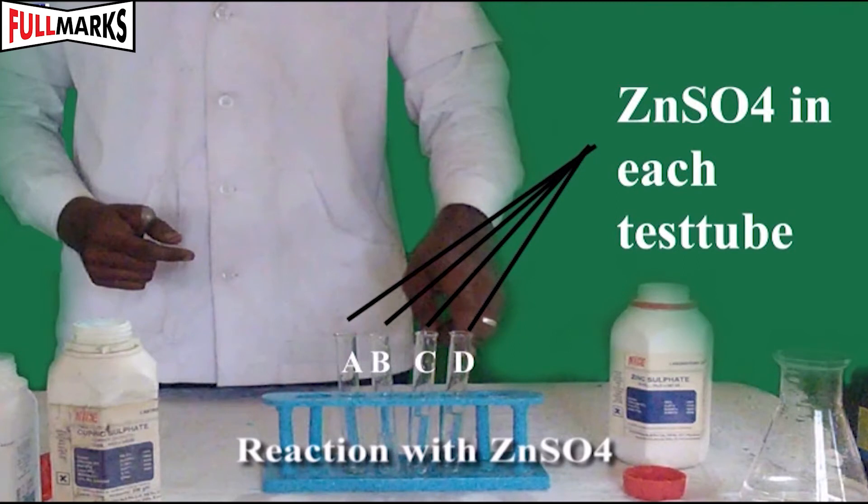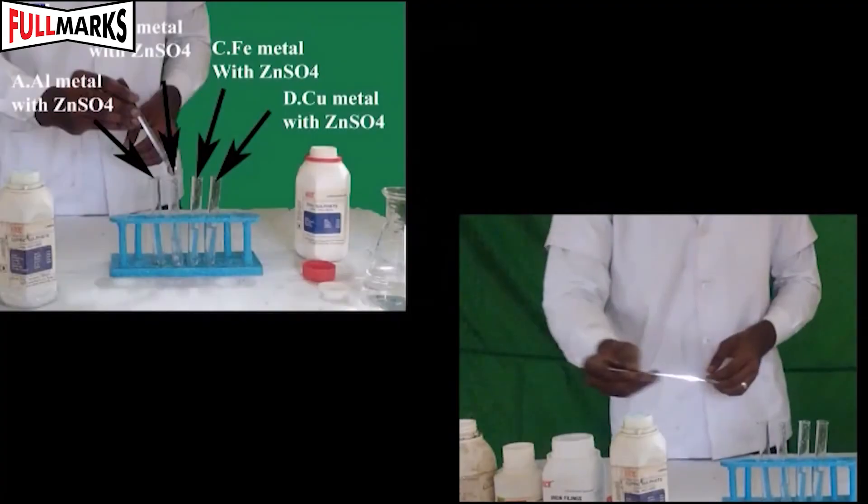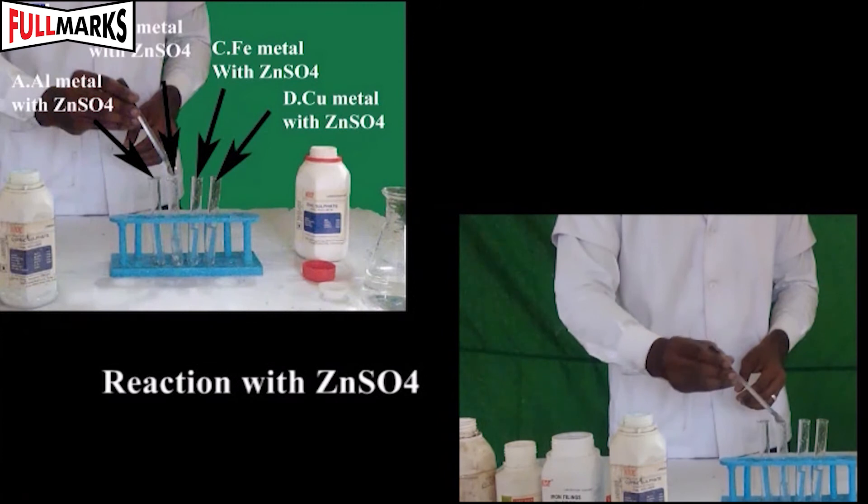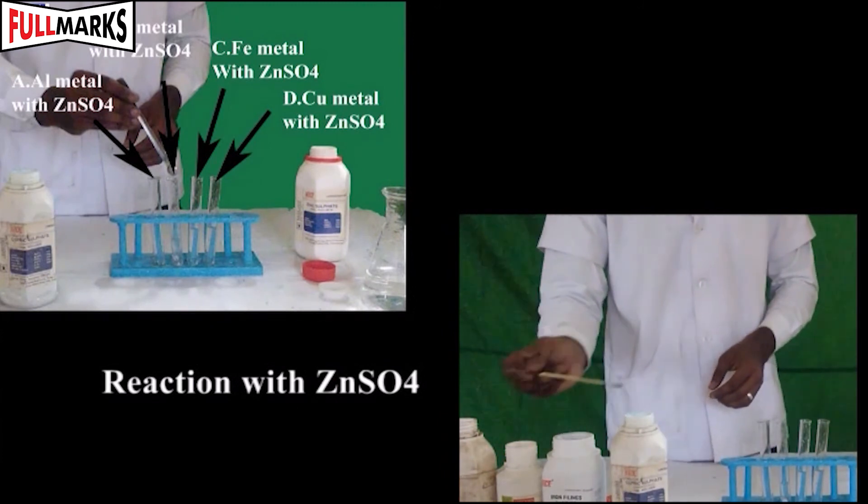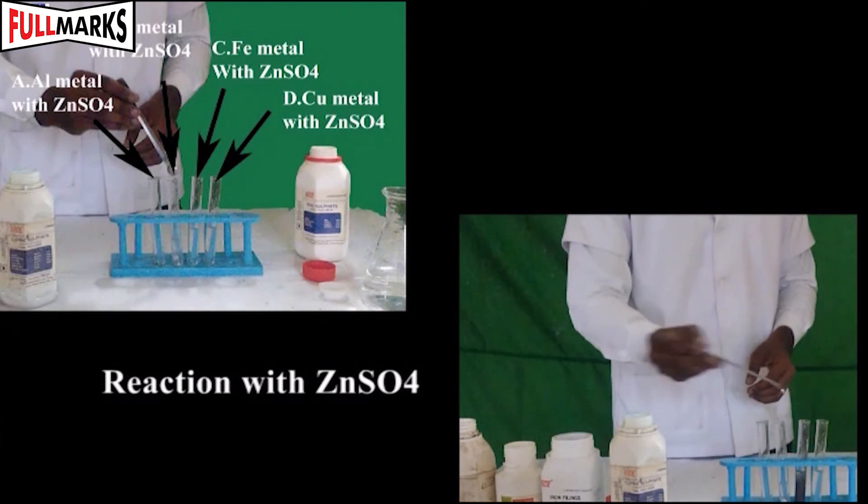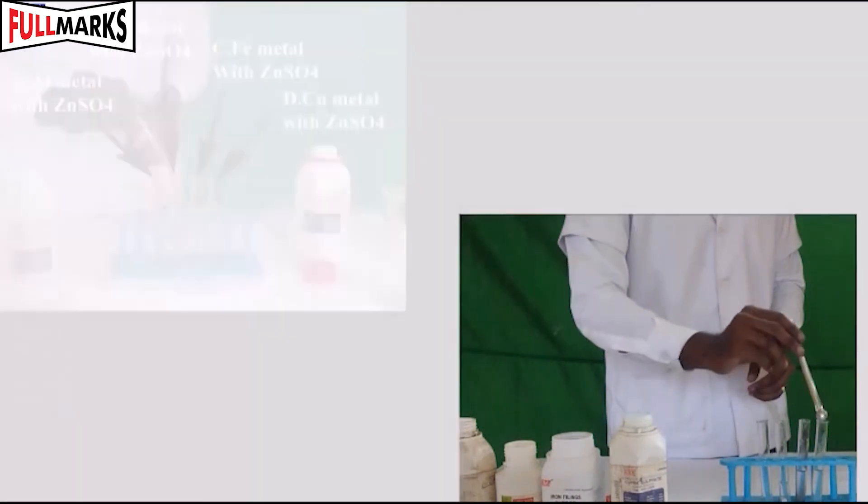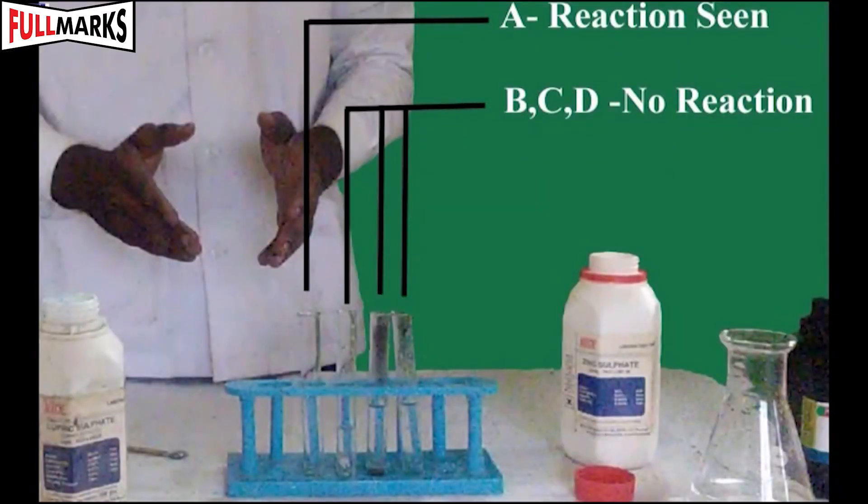Reaction with ZnSO4 solution: Add zinc sulphate solution in each test tube. Dip the small clean pieces of aluminium, zinc, iron, and copper metal in each test tube respectively and record your observations. In A, there is a reaction seen, but in all other test tubes B, C, and D, there's no change and no reaction taking place.